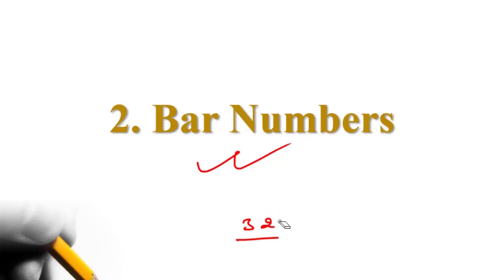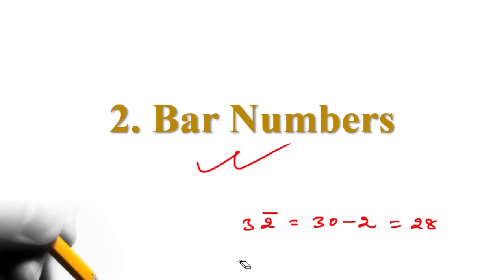So what does it mean? When the number is having a bar, it means this is 30 minus 2, that is 28. Let us suppose there is a number 24 with a bar — it means 20 minus 4. And 38 means 30 minus 8, that is 22.